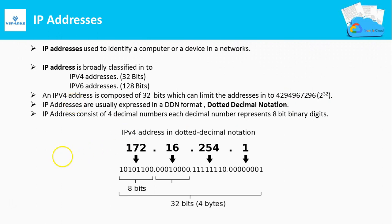Actually, these IP addresses expressed in DDN format are interpreted into binary bits at the back end. There is a simple picture shown below in DDN format.